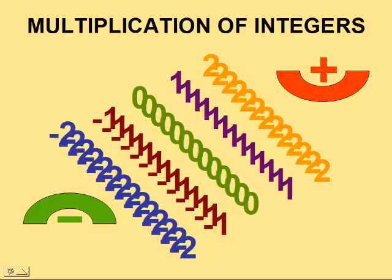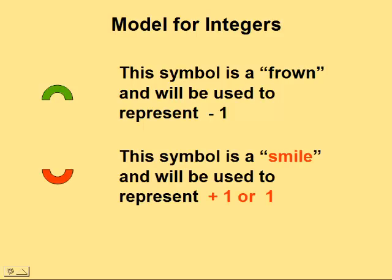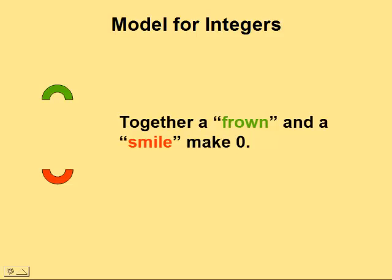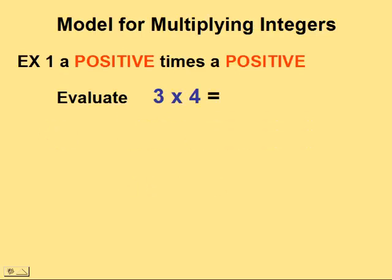This lesson is on the multiplication of integers. We'll begin by explaining what our model is. We will use an upside-down semicircle to represent a frown, and a frown represents negative one. A smile represents positive one. Together, a frown and a smile make zero — in other words, minus one plus one equals zero.